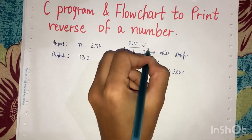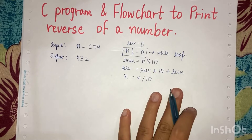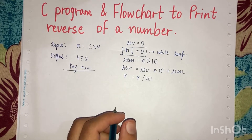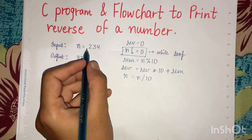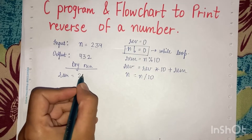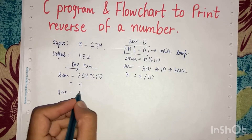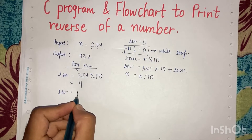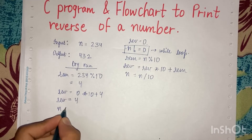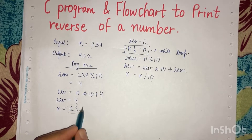Then we will divide the number. Let me do the dry run. The number is 234, so remainder = 234 modulus 10 = 4. Rev is initially 0, so rev = 0 * 10 + 4 = 4. Then n = 234 / 10 = 23.